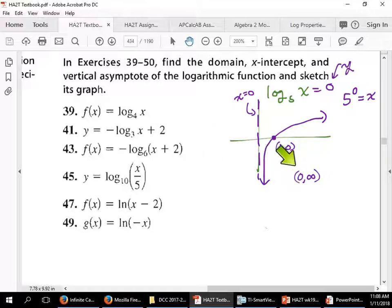So the domain will not change unless you're adding and subtracting to the x. Like this one, the domain's going to change because we're subtracting 2 from the x. If I subtract 2, the asymptote moves to the right 2. That's how you find the domain and the x-intercept.